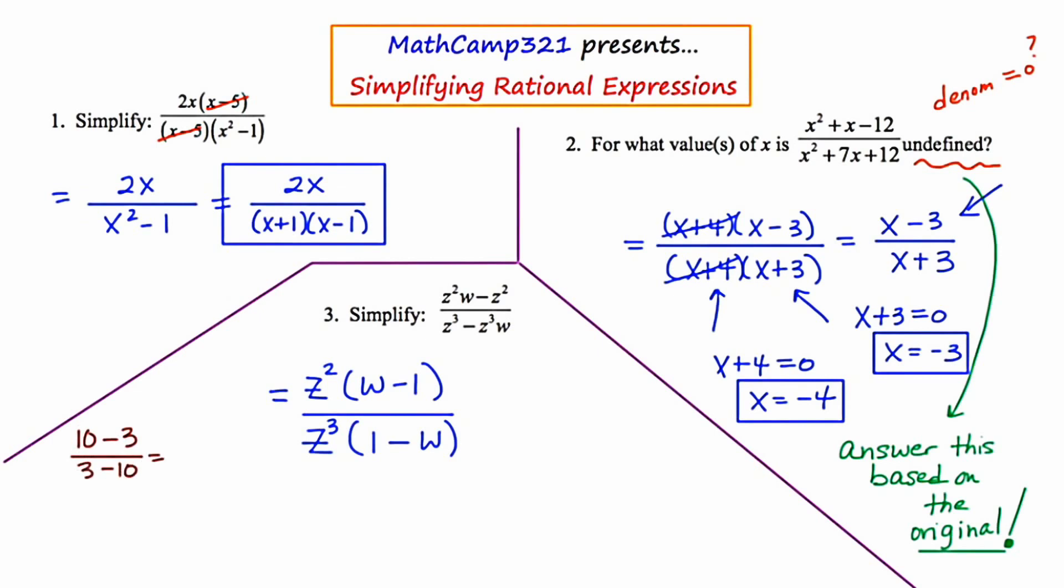This little problem that I've just invented, the two expressions are complete opposites of each other. We have a 10 and a negative 3 on the top, but a positive 3 and a negative 10 on the bottom. Watch what happens when you simplify. 10 minus 3 is 7, 3 minus 10 is negative 7, and you end up getting negative 1.